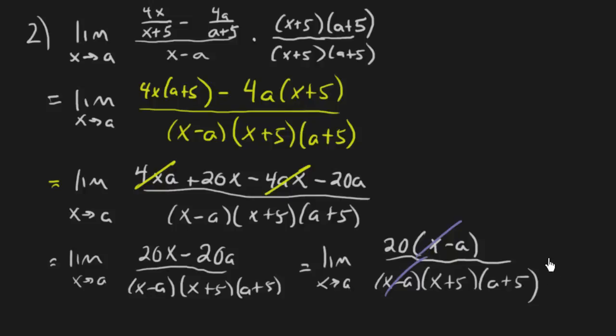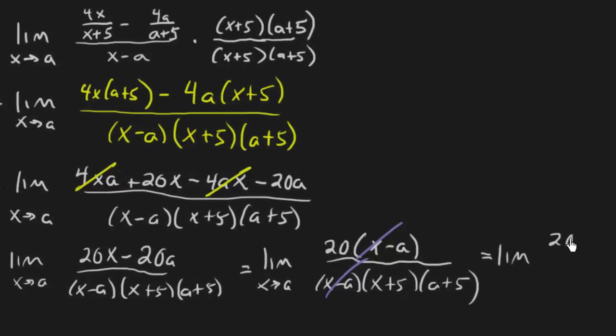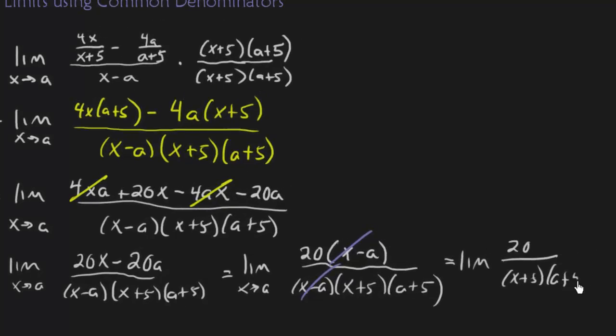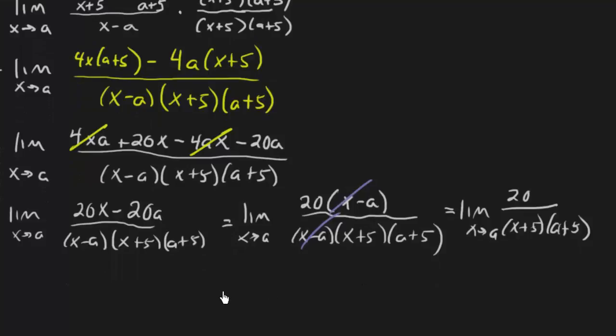And we have left a 20 on top, an x plus 5, and an a plus 5. So now if I plug in x equals a, we're going to get 20 over a plus 5, another a plus 5. And that gives me 20 over (a plus 5) squared. And so that is my limit.